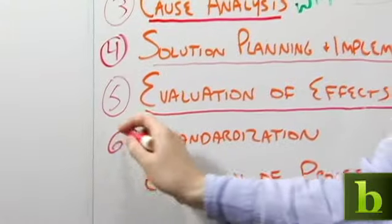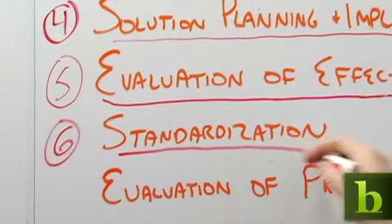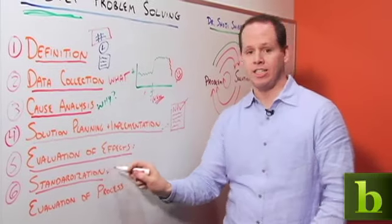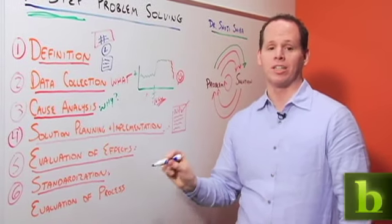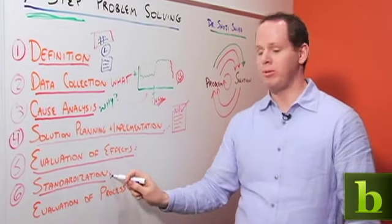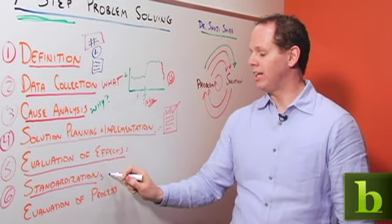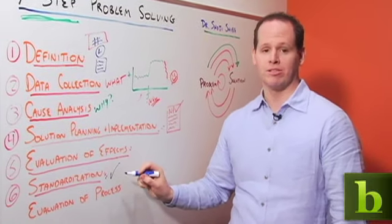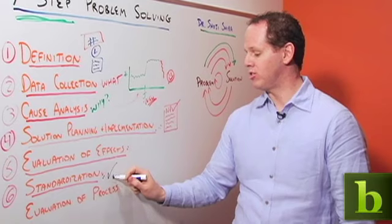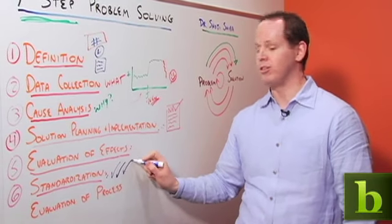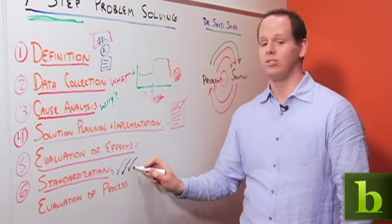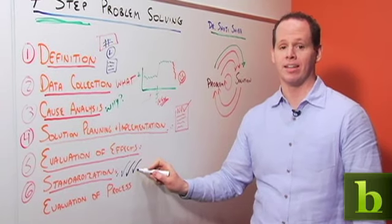Then we move to step six. Step six is standardization. The idea of standardization is we've gone through a lot of work to get the solution. Let's see how widely we can use it in the organization. So can we use it with other products, new ones released from now on or old ones? Can we use it internally with other departments? Can we leverage it with partners somehow? Anything we can do to widely adopt the learning that we've worked so hard to get.